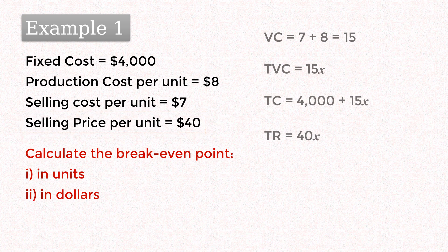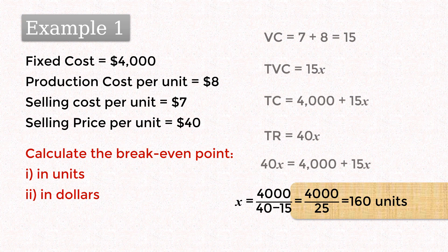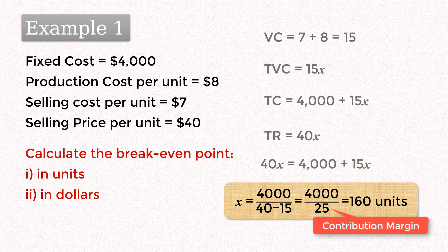To find the breakeven unit, we can solve for x in the total revenue equals total cost equation or simply divide the fixed cost by the unit's contribution margin. And that gives 160 units. So in order to breakeven, we must produce 160 units.